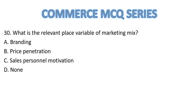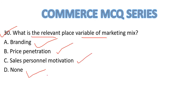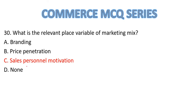Question Number 30: What is the most relevant place variable of the marketing mix? Options are branding, price penetration, sales personal motivation, or none of these. The most relevant place variable in the marketing mix is sales personal motivation. So Option C is the correct answer.